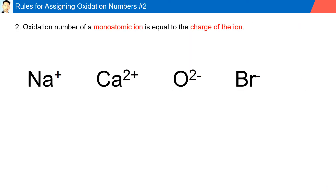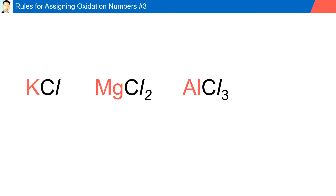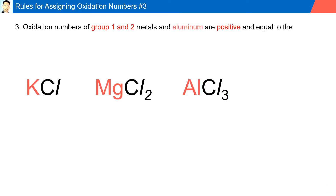Rule number two: the oxidation number of a monatomic ion is equal to the charge of the ion. For example, sodium has a one-plus charge, therefore its oxidation number is plus one; calcium has a two-plus charge, its oxidation number is plus two; oxygen has a two-minus charge, its oxidation number is minus two; while bromine has a one-minus charge, its oxidation number is minus one.